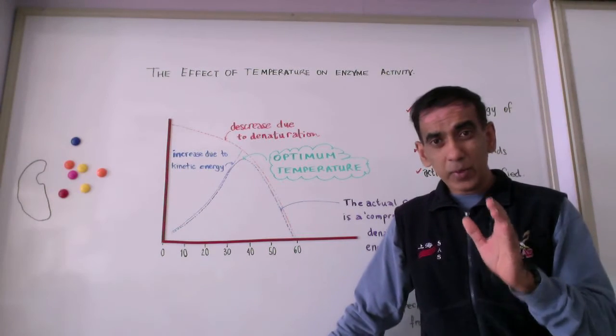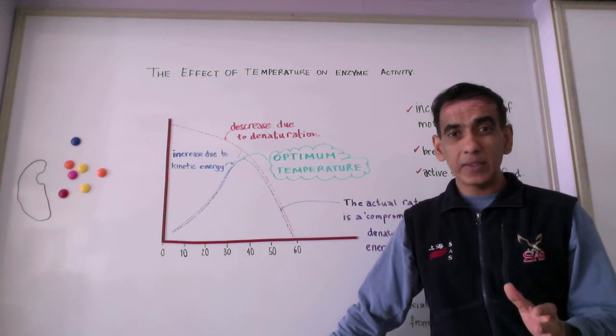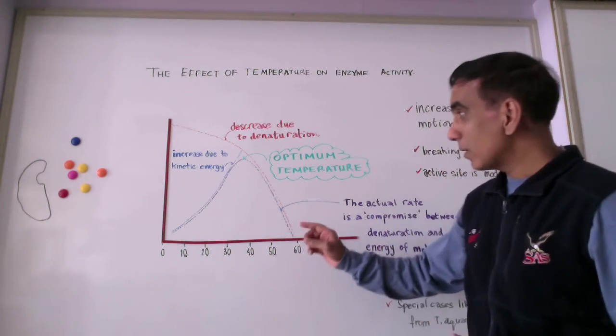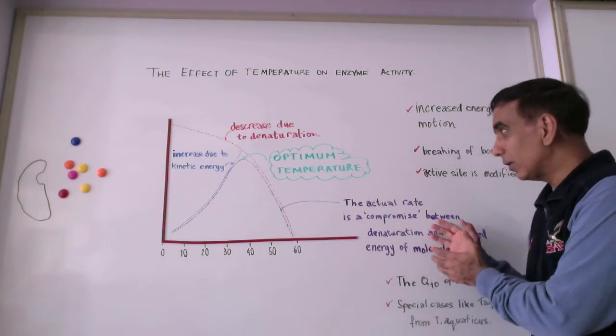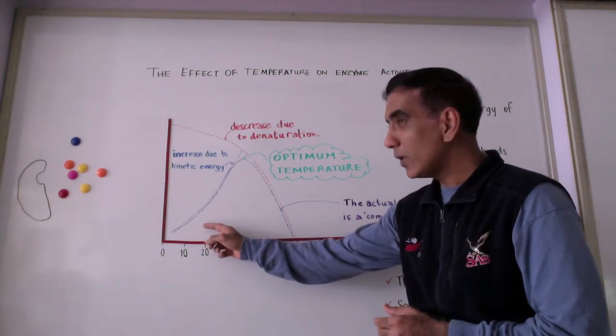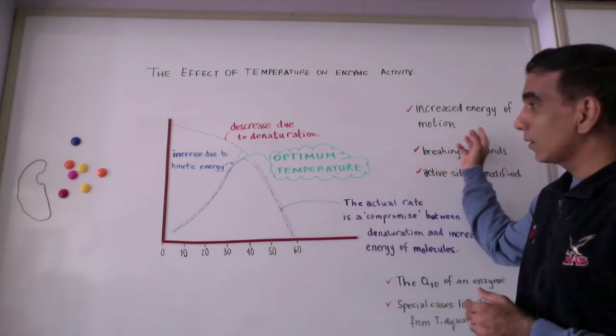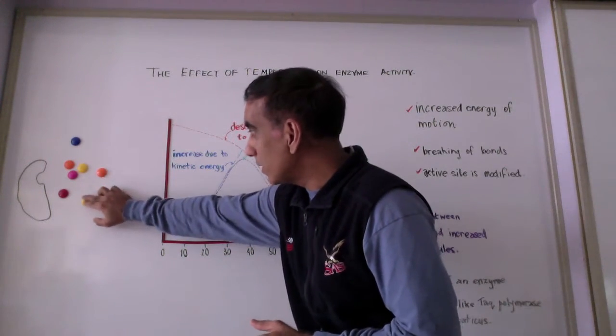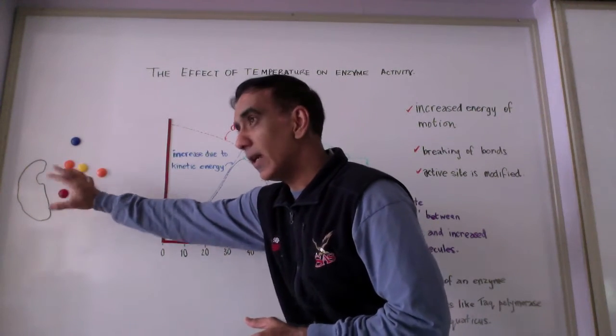So the maximum rate of an enzyme-catalyzed reaction depends upon a balance or a compromise between the increasing molecular motion caused by movements of molecules of substrate and enzyme.